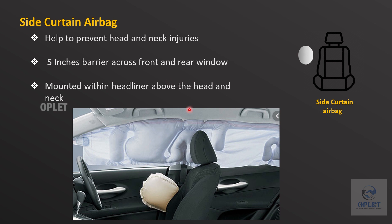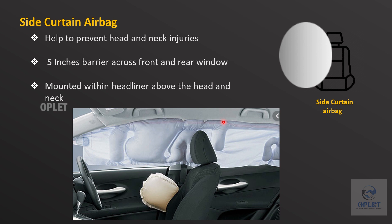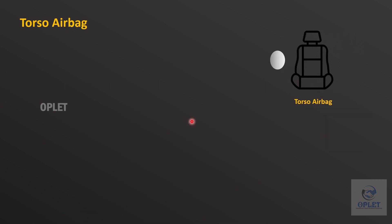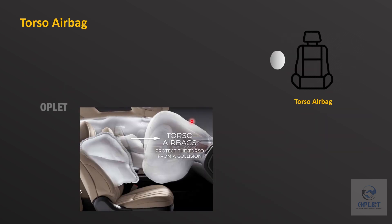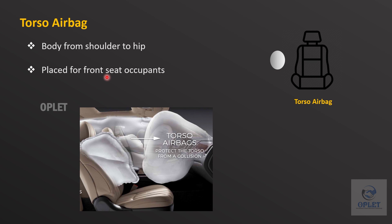The major difference between side curtain and traditional airbags is the size and structure. Torso airbags protect the body from the shoulder to the hip. They are often placed for front seat occupants, but depending on the manufacturer may also be included for rear seat occupants. They are deployed from the seat or door to form a cushion between the occupant's torso, the door panel, and the vehicle body.